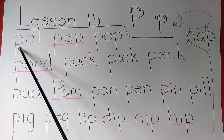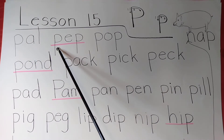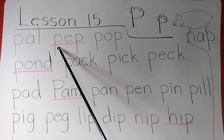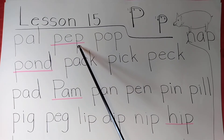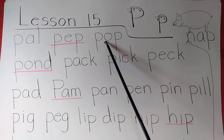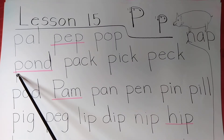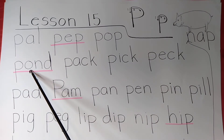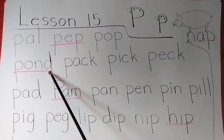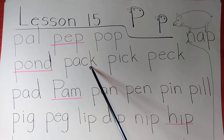First one — P-A-L — pal. P-E-P — pep. P-O-P — pop. P-O-N-D — pond. P-A-C-K — pack.